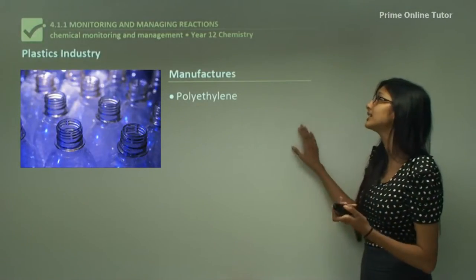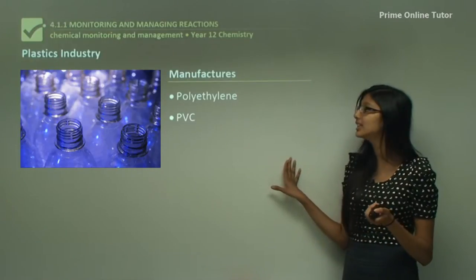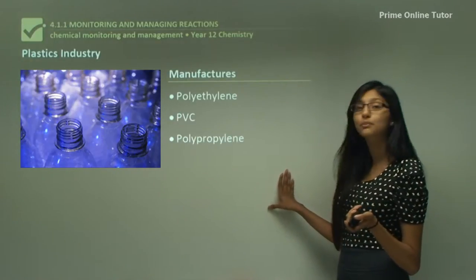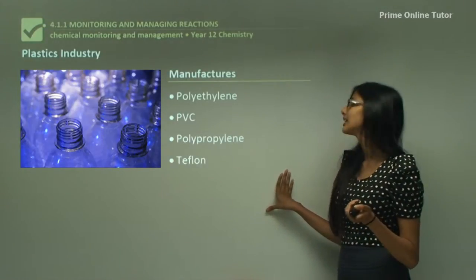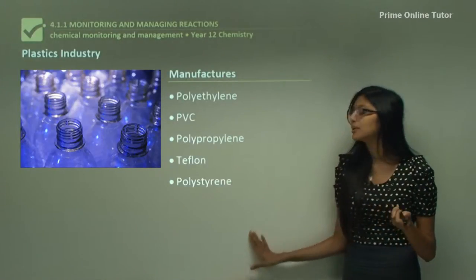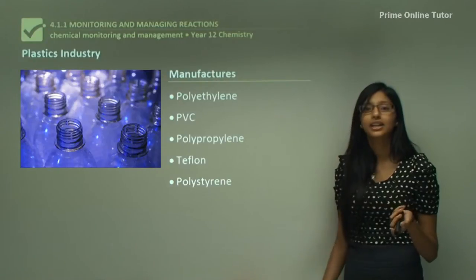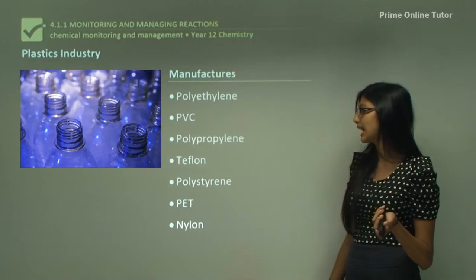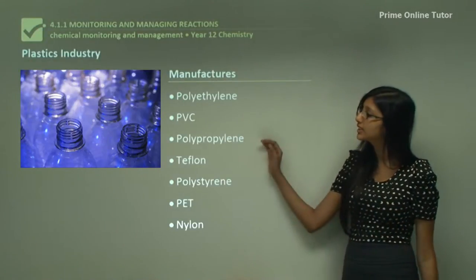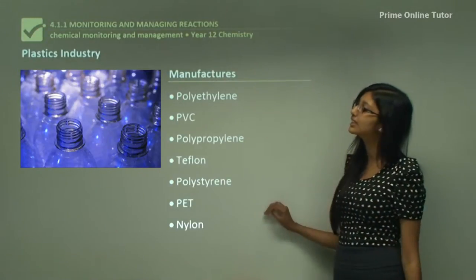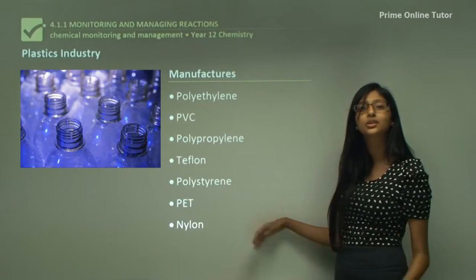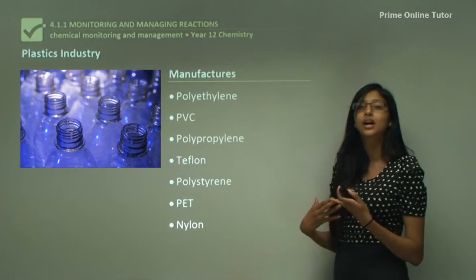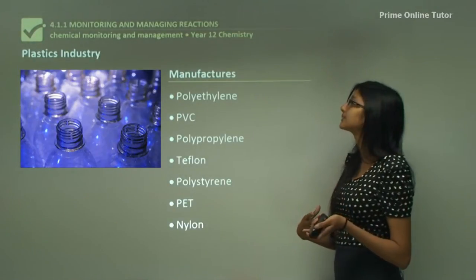The plastics industry manufactures polyethylene, PVC, polypropylene, Teflon, polystyrene, PET, and nylon. So as you can see, the plastics industry mainly focuses on things to do with plastics and petrochemical products.